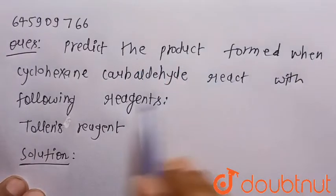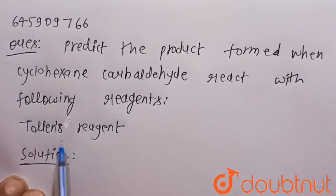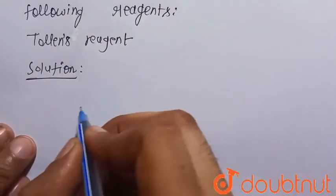Predict the product formed when cyclohexane carbaldehyde reacts with the following reagent. So the given reagent is the Tollen's reagent. So we know that cyclohexane carbaldehyde is...